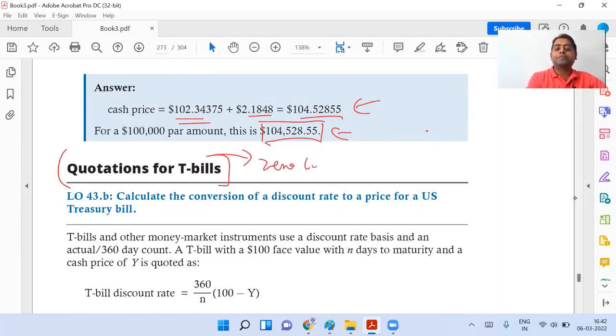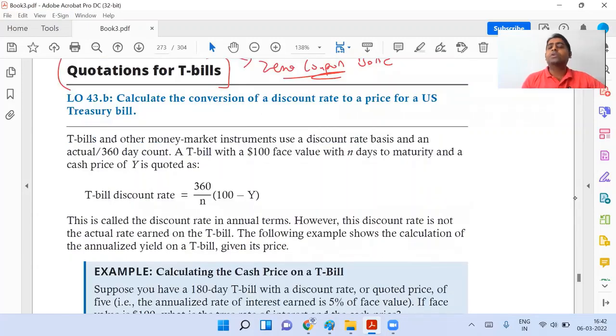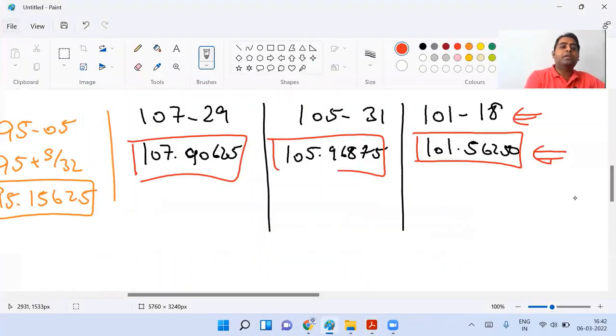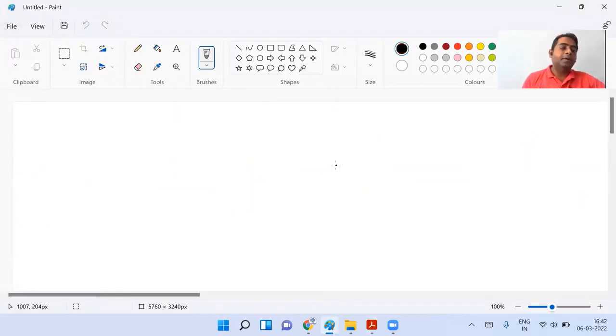T-bills are zero coupon bonds. Now there are certain formulas that they have given you. There is no need to remember this formula, it's very simple and I will try to explain it to you as easy as possible.